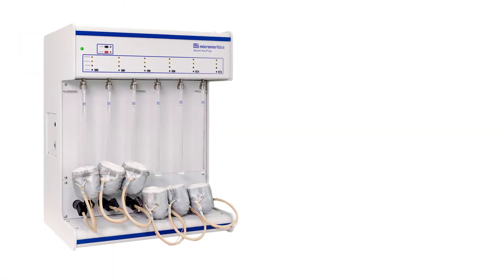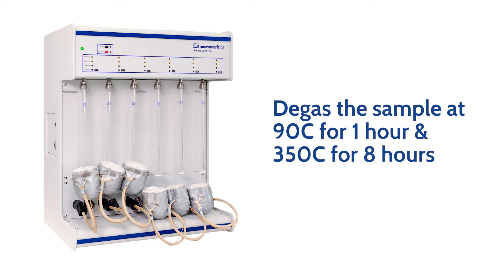Load the sample tube on a separate degas unit and degas at 90 degrees Celsius for one hour and 350 degrees Celsius for eight hours.